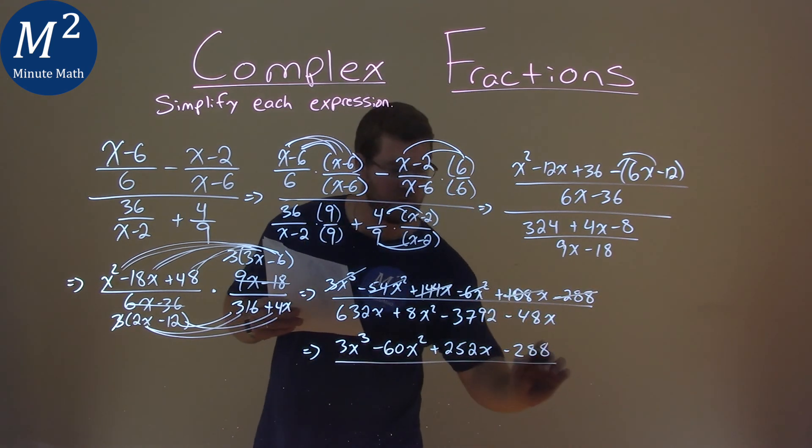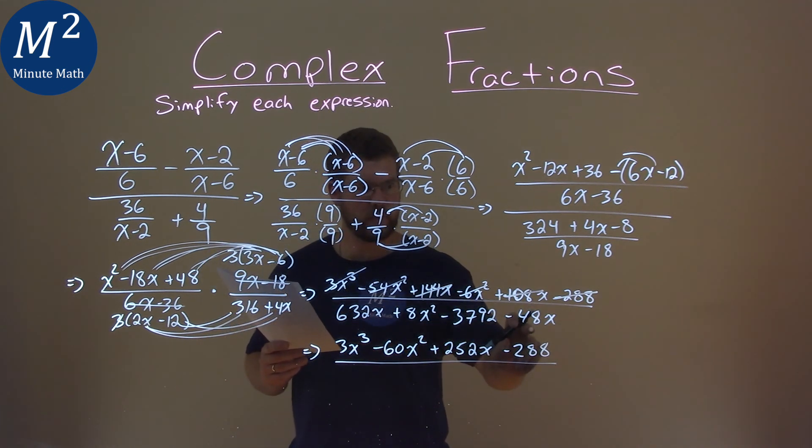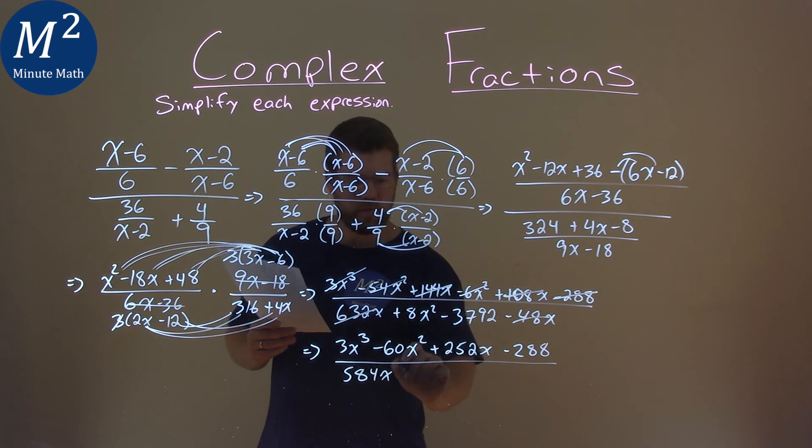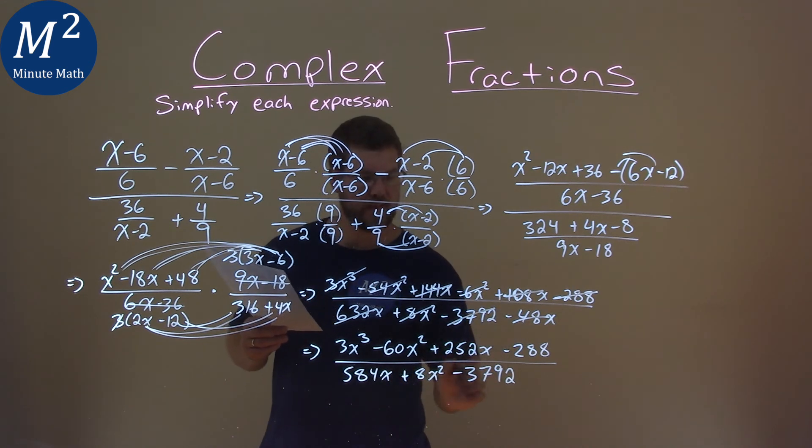Now, let's deal with a good old denominator here. Alright, let's do what the x is first. 632x minus a 48x is a 584x. Cancel those out. We have a plus 8x squared. And you can write this first, man. It's alright, whatever. And then we have a minus 3792 right there. That's the last one we're subtracting it. And that is it. We're simplified now.